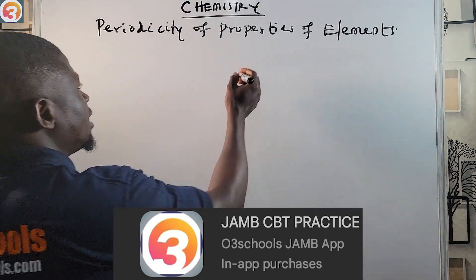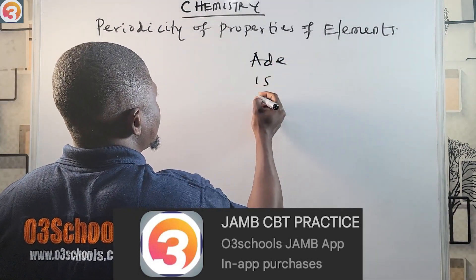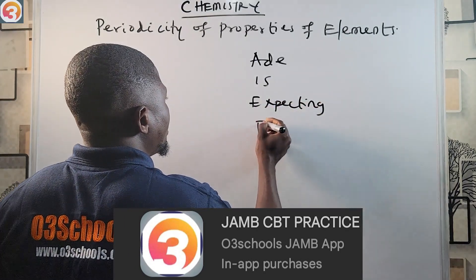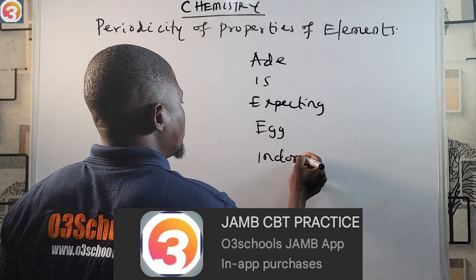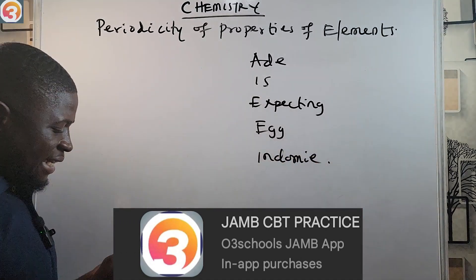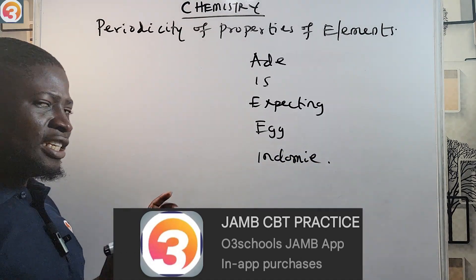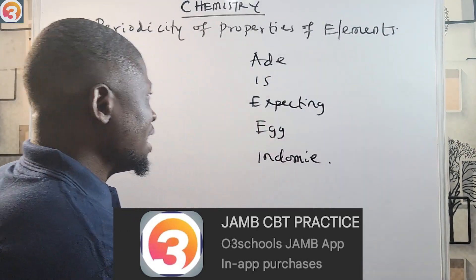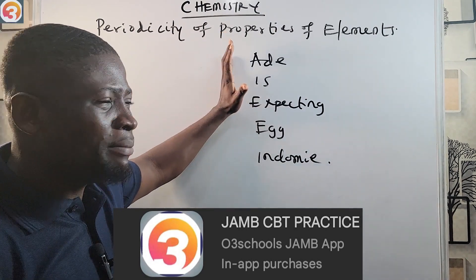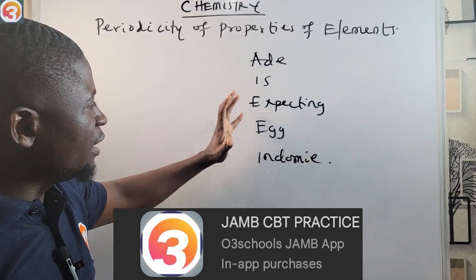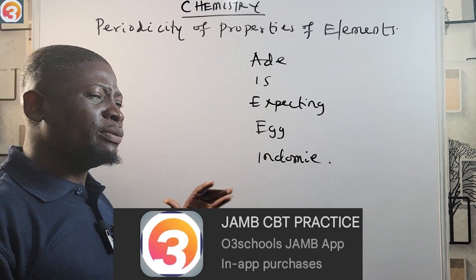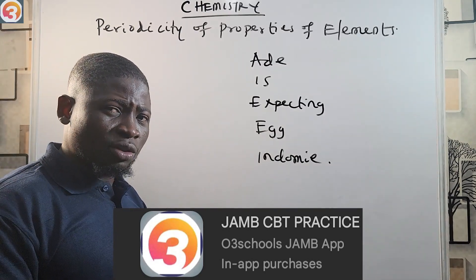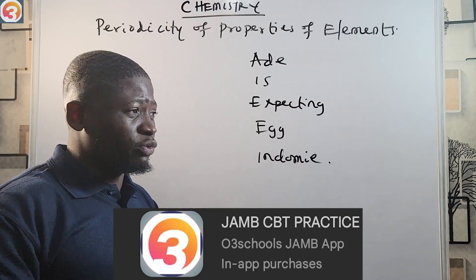I'm going to use a mnemonic to remember these five properties. The mnemonic is: 'A Day Is Expecting Egg Indomie.' You must remember these five properties in order — one, two, three, four, five — to adequately understand this and apply it to exam questions.